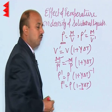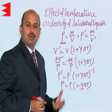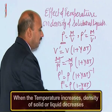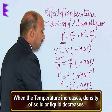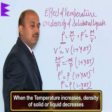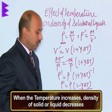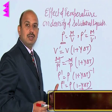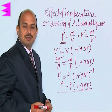Here gamma is the coefficient of volume expansion. So when the temperature is increased, the density of the solid or liquid decreases.